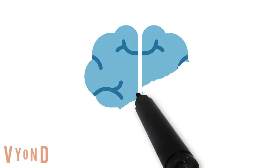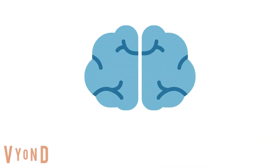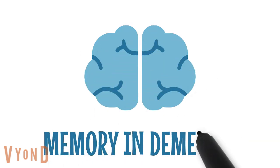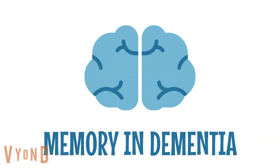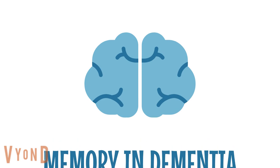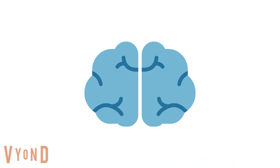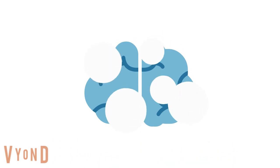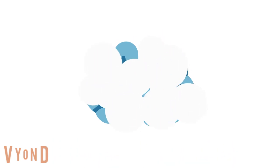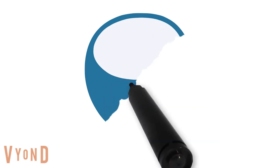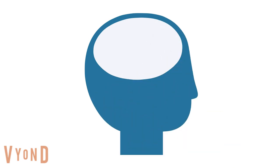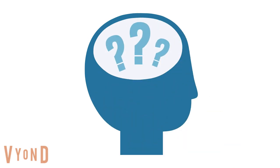Hello, today we're going to be taking a look at different types of memory in dementia. Dementia is characterised by a deterioration of brain cells. The most noticeable deterioration in many types of dementia is to memory.